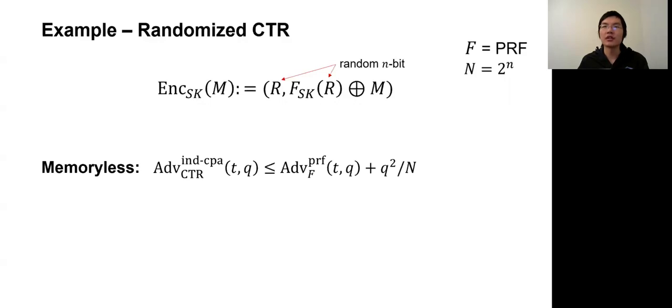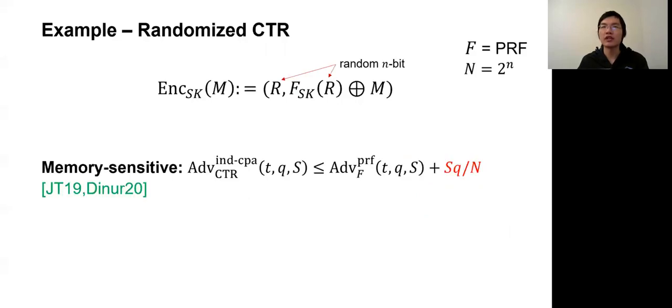The classical textbook security analysis ignores the memory complexity of the adversary. In the upper bound, the best known CPA security advantage for an adversary running in time t and encrypting Q messages. This upper bound is in terms of the PRF security advantage for F and an additional information-theoretic term that only depends on Q. The Q squared over big N tells us the scheme is secure only when Q is smaller than square root of big N, where big N equals 2 to the small n. This is due to the fact that the randomly sampled R would collide with good probability when Q is around square root of big N. Such attacks are to simply record all queries until a collision is found to break the scheme. This attack, however, appears to require memory.